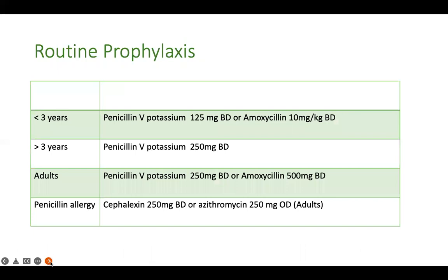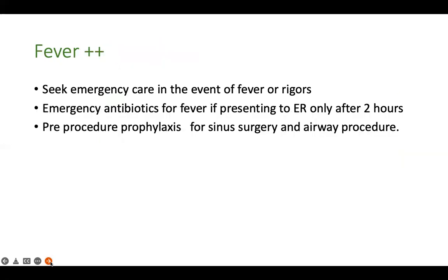Which drugs should be given for antibiotic prophylaxis? Oral penicillin V potassium at an age-appropriate dose is preferred. If penicillin V potassium is unavailable, amoxicillin 10 mg/kg BD may be given. For patients allergic to penicillin, the options are cefalexin or azithromycin.